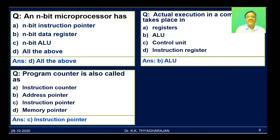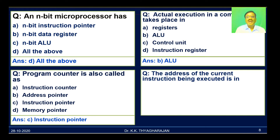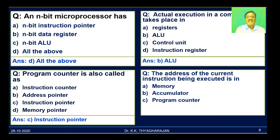The fourth question: the address of the current instruction being executed is in — A, memory; B, accumulator; C, program counter; D, cache register. The program counter holds this address, so C is the correct answer.